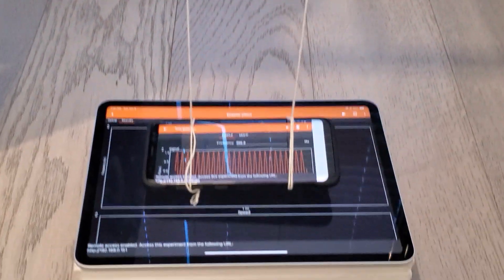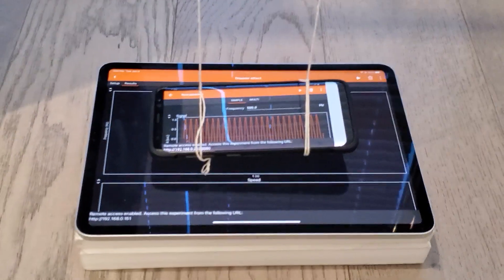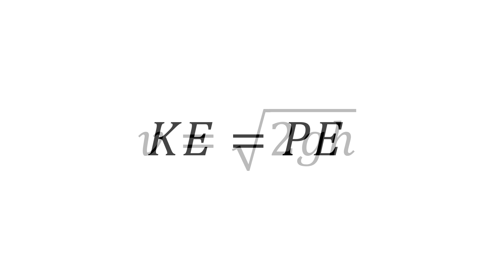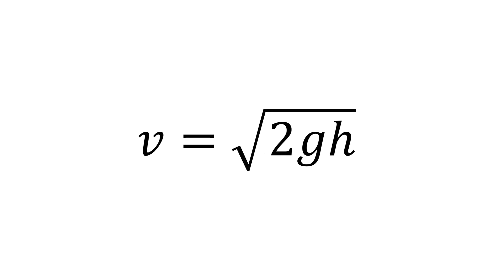Here we have the pendulum contraption used to observe the Doppler effect. The velocity of the pendulum can be modeled according to the following formula, which is derived from the energy formulas, where m cancels out to isolate for v, which is the velocity of the sound source or the pendulum, g is the acceleration due to gravity, and height is the height from the pendulum to the bottom of the pendulum.